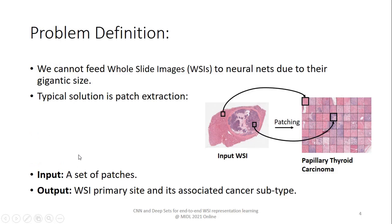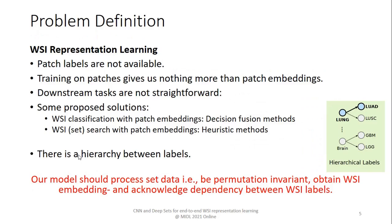Let's start with problem definition. Whole slide images are too large, and due to this gigantic size we cannot feed them directly to neural networks. The typical step for bypassing this computational and memory bottleneck is decomposing the WSI into a set of patches. The simplest way to apply machine learning on this data is to train on patches and treat each patch as an individual data point. But if we do this, we must consider that patch labels are not available, and we cannot use the WSI label for patch labels because it is not valid for all patches in the WSI.